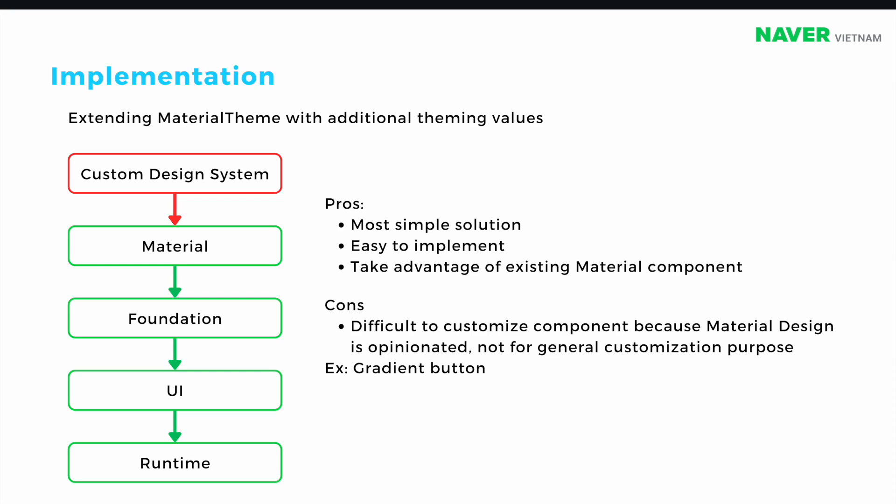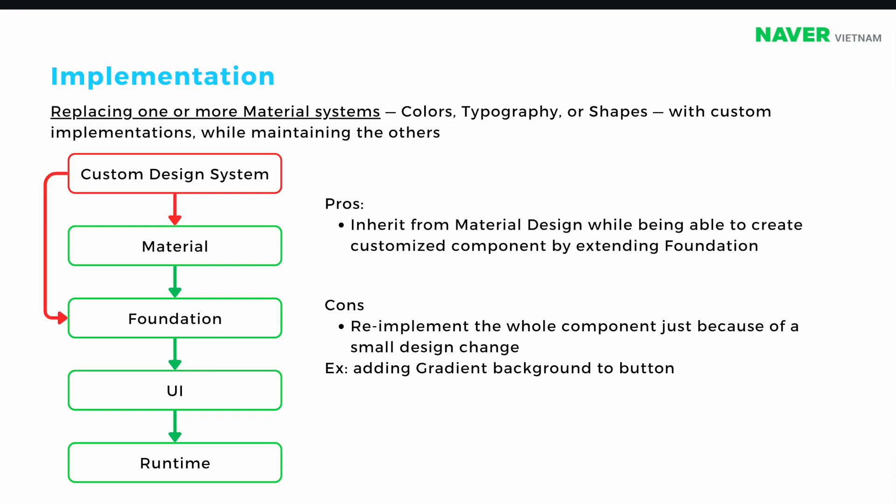Material Design is not a general design system — it is opinionated for Google products. For example, it would be hard to make a gradient button because the Material Design button doesn't support gradient backgrounds. If we need such customization, we need another solution by replacing one or more Material systems — essentially creating the component from scratch without extending the button from Material Design. Usually you will copy the implementation from Material Design and make your own customization on top of it. But the drawback is you will miss the pre-implemented behavior from the Material button, such as a slider starting from the center where you need to redraw the track relative to the center value.